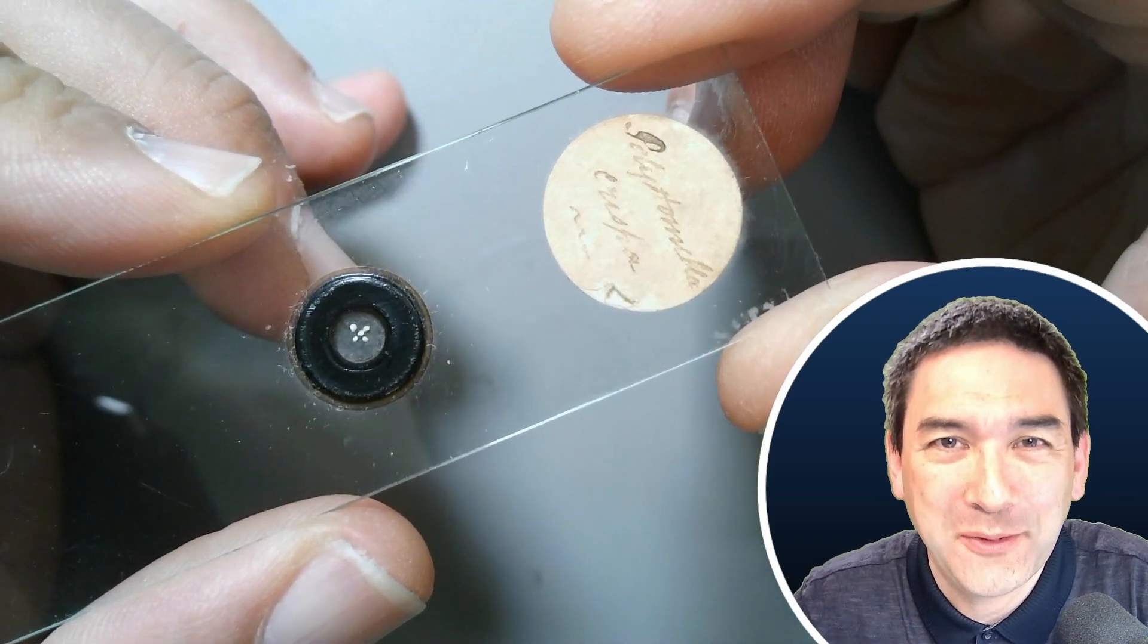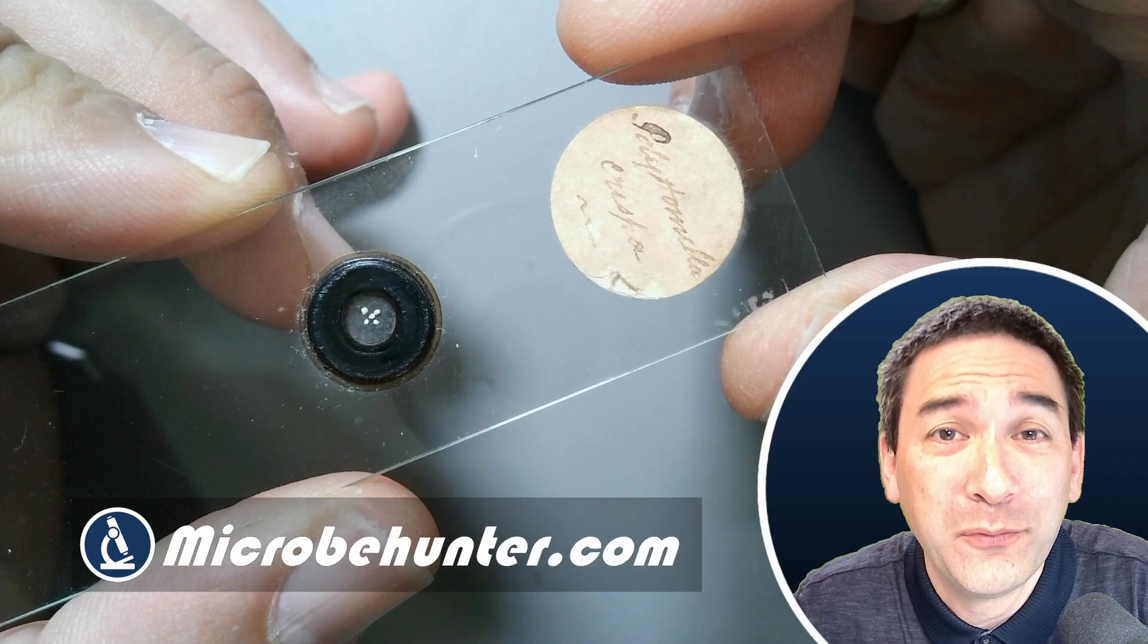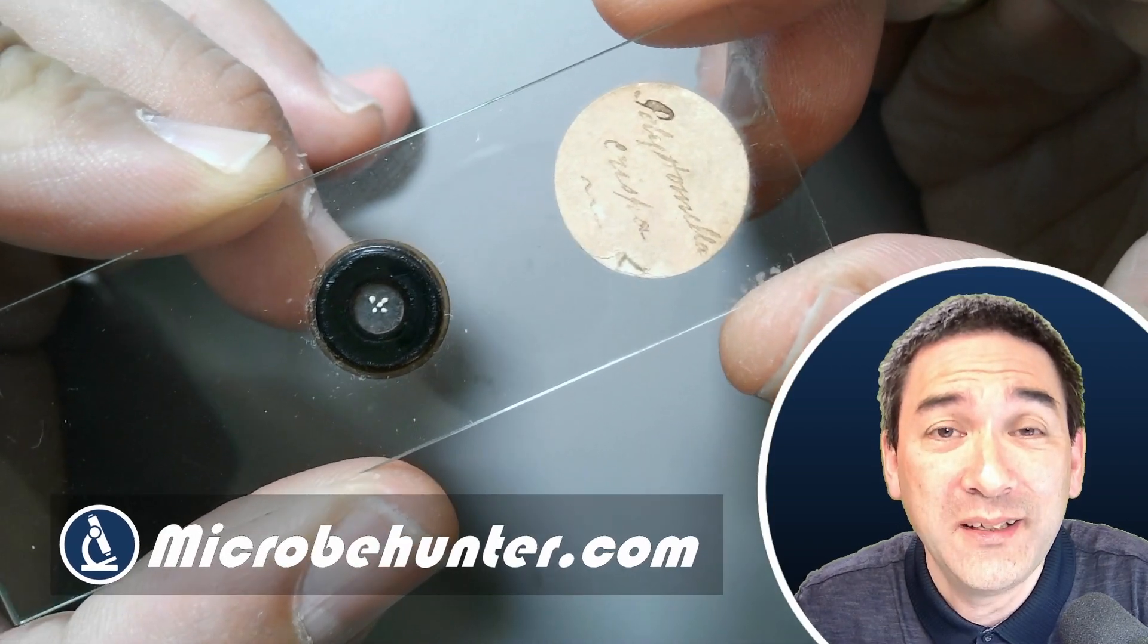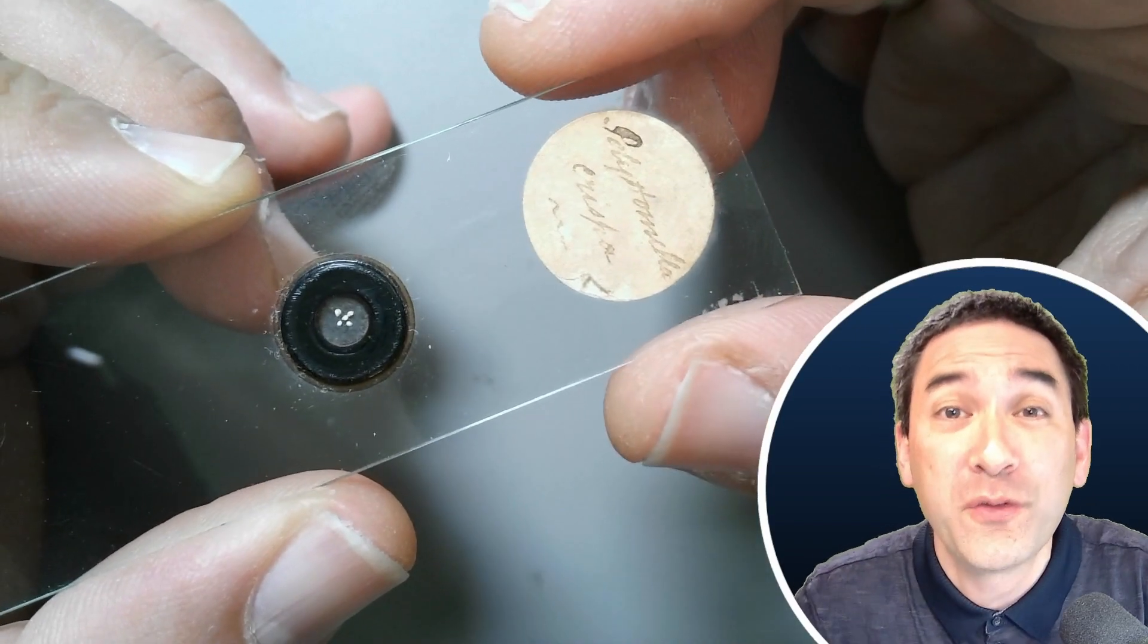So hi, hello and welcome, Microbe Hunter here. Today I would like to show you this beautiful antique microscope slide. It contains the shells of foraminifera, or also known as forams.